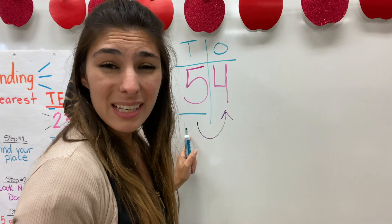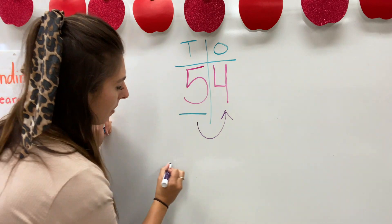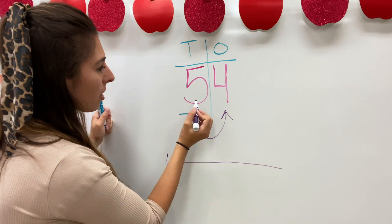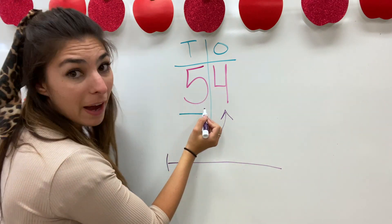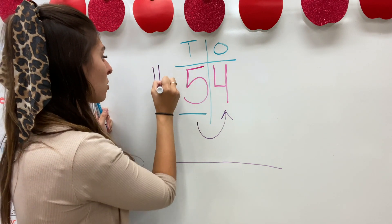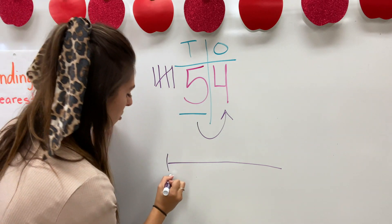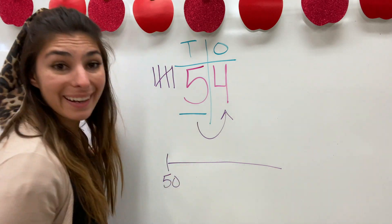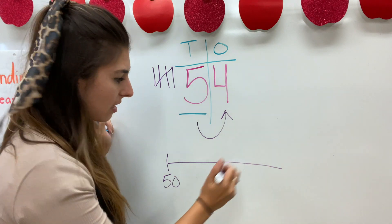Now step two, look next door — I'm going to look next door at this four, but I'm also going to look next door as far as making a number line. So I'm going to draw my number line here. The tens digit is five, so that's 50. We are going to start that number line at 50 and we can only go up 10, so we go up to 60.